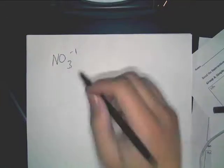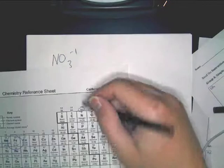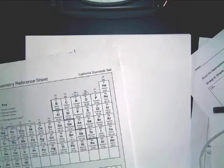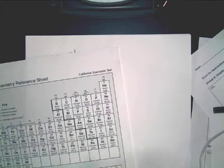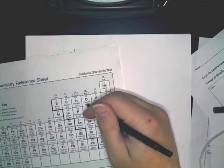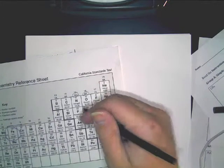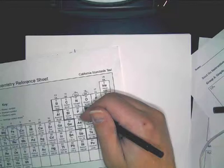Alright, so to draw the Lewis structure of nitrate, first you've got to figure out how many valence electrons you have. Please make sure you know how to do this. Something that a lot of kids have already done, they've gotten the ionic charge confused with the valence number.